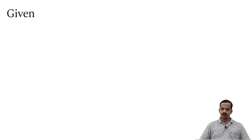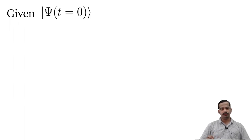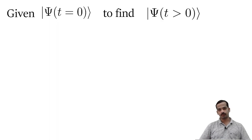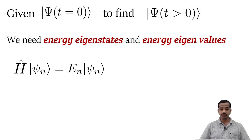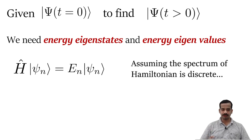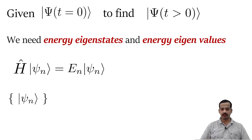Suppose we are given a quantum mechanical state at t equal to 0 and if we wish to find the quantum mechanical state at t greater than 0, the first thing that we need is energy eigenstates and energy eigenvalues of the system. That means we should solve the Hamiltonian eigenvalue equation: H-cap psi-n is equal to E-n into psi-n. If we solve this equation, we get energy eigenstates. Usually these eigenstates are orthogonal to each other.